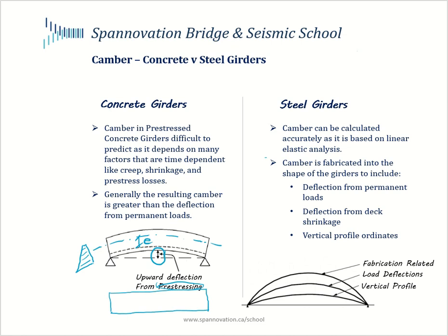However, it is very difficult to predict camber values on pre-stressed concrete girders. This deflection depends upon several time-dependent factors such as creep — under constant compressive load, concrete continues to shorten. Concrete also shrinks, and there are also losses in pre-stressing. All of those factors need to be accounted for in the calculation of camber values. Despite extensive research and elaborate empirical formulas, it is still very difficult to predict these with a high level of accuracy.